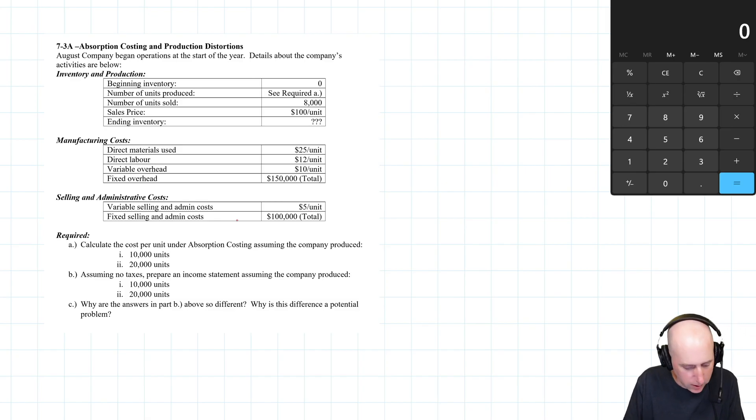So first question says calculate the cost under absorption costing assuming the company produced 10,000 units. If we made 10,000 units, let's see where our cost is. Material plus labor plus overhead: 25 plus 12 plus 10, that's 47, that's our variable cost. And then we go $150,000 divided by the number of units made, 10,000, so it's going to be $150 divided by 10 is $15. So 47 plus 15...